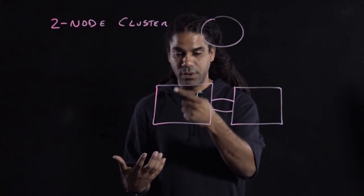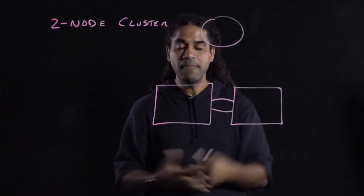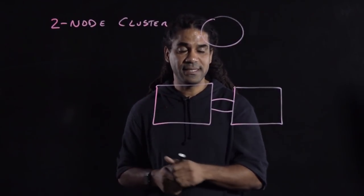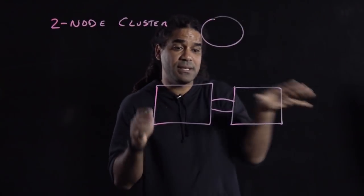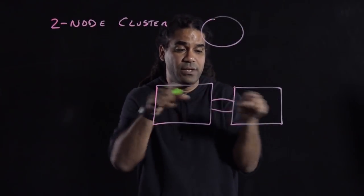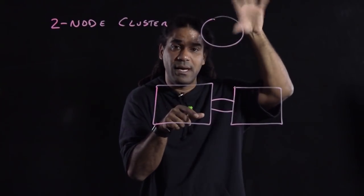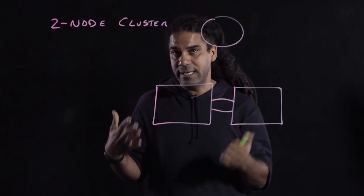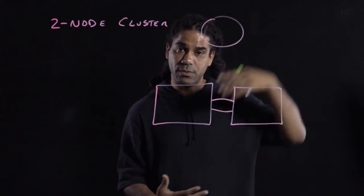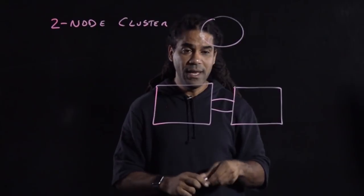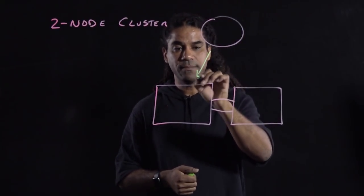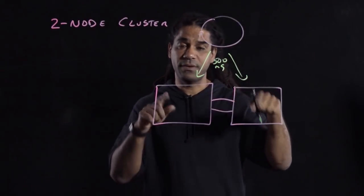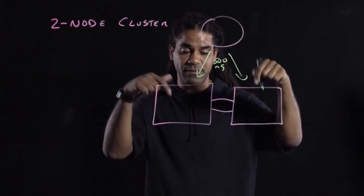The two-node cluster is basically two nodes with a third ESXi host, which is a virtual appliance running somewhere outside of this location. The somewhere else could most likely be where your vCenter is, but you can also run it in your cloud, as long as that third location is within 500 milliseconds round trip from these two nodes.